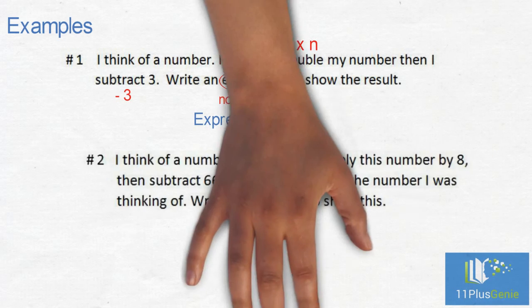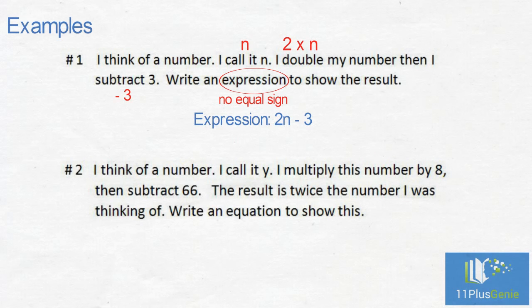Example number 2. I think of a number. I call it y. I multiply this number by 8, then subtract 66. The result is twice the number I was thinking of. Write an equation to show this.